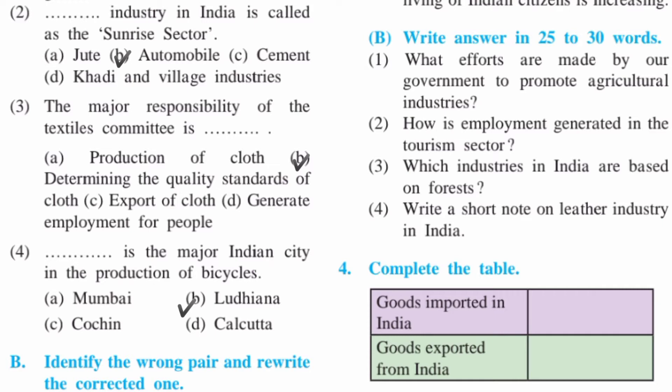Third: The major responsibility of the Textile Committee is determining the quality standard of cloth — answer B. Fourth: Dash is the major Indian city in the production of bicycles — answer is B, Ludhiana. Take the next question.